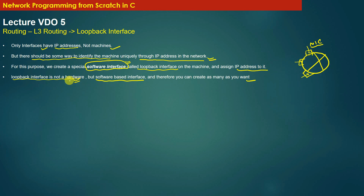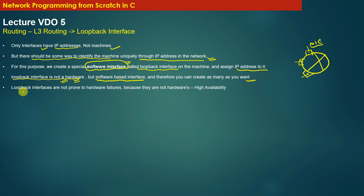Loopback interfaces are not hardware. There is a piece of software running on the router or network device that simulates an interface to the operating system. Because loopback interfaces are simulated by software, you can create as many as you want on a network device and assign IP addresses to them.